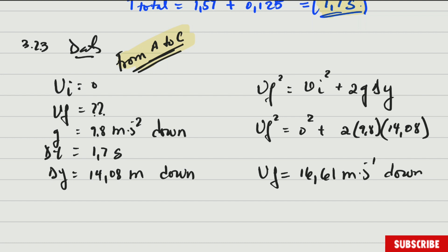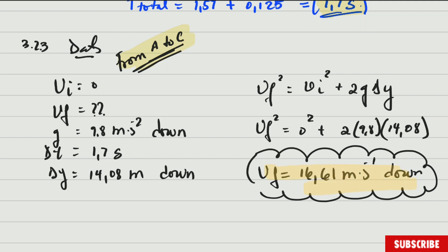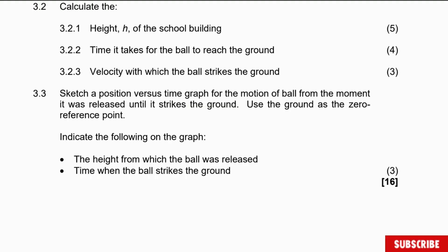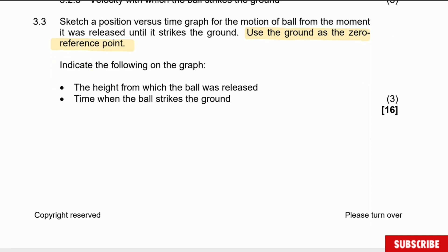Now, the question is asking for velocity, which does have direction. Therefore you do have to write the direction. Then to finish, the question says draw a position versus time graph for the motion of the ball from the moment it was released until it strikes the ground. Use the ground as the zero reference point — that is an important detail. You must use the ground as the zero reference point. Indicate on the graph the height from which the ball was released and the time when the ball strikes the ground.